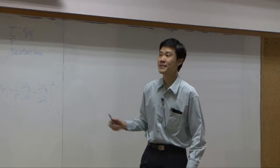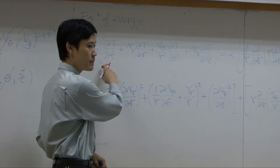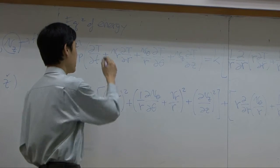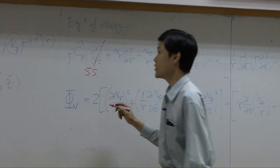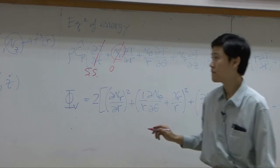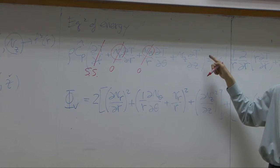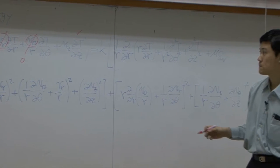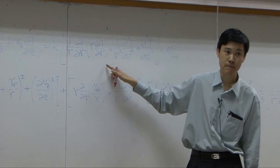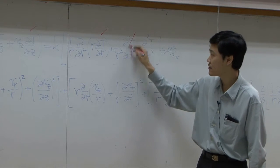Let's drop some terms, starting with this one. Is it zero? It is zero under steady state. We know that Vr is zero, so Vr here is zero. Vz is zero. Does T change with respect to Z? Yes, so this term must be kept. Does T change with respect to R? Yes, so this term must be kept as well. T does not change with respect to zeta, so this term is dropped.